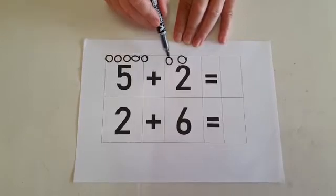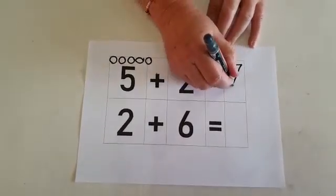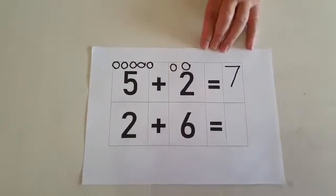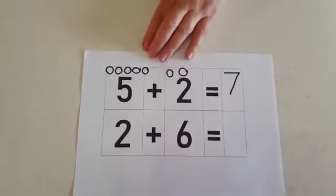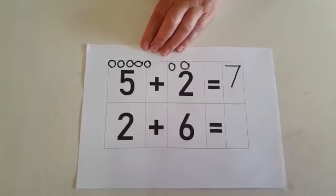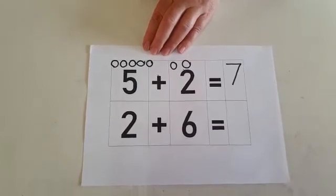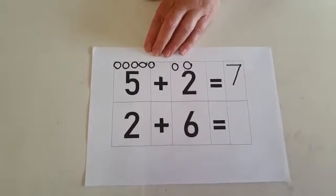5 plus 2 equals 7. Very good. Can you see that the circles are nicely spaced out so that it's easy to count them? So if they're on top of each other, you're going to make mistakes, you're going to count wrong. If you make nice circles like these ones, it's easy to count.